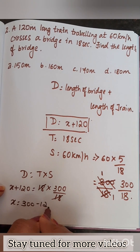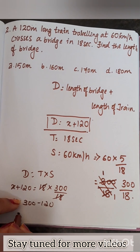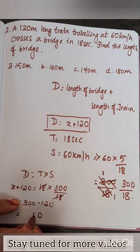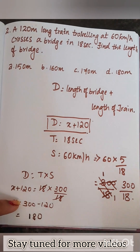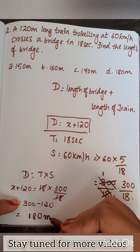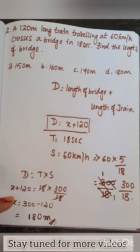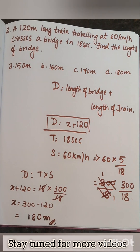So x equals 300 minus 120, which gives 180 meters. That is the answer. If you like my video, please do like, share, and subscribe. Thank you, bye bye.